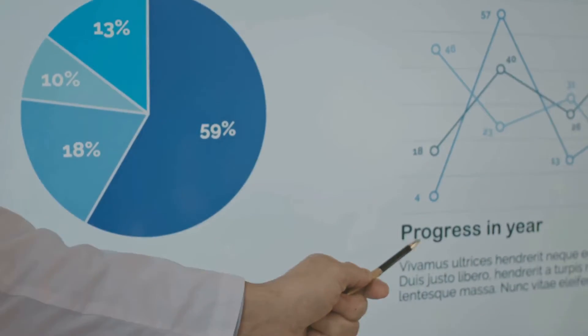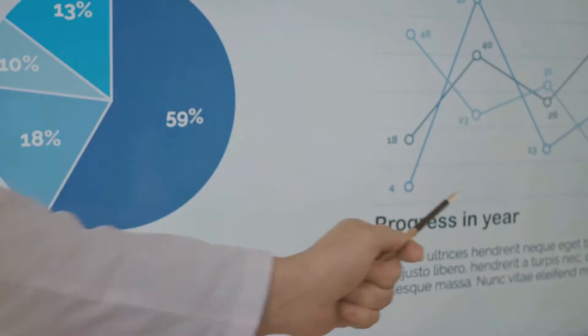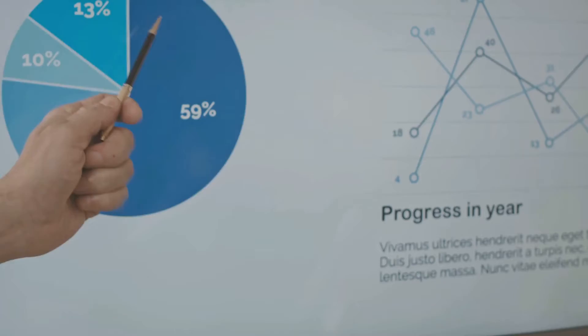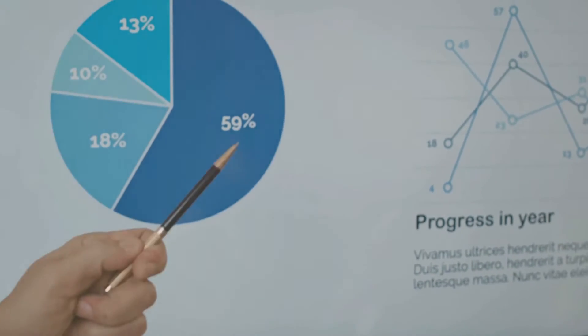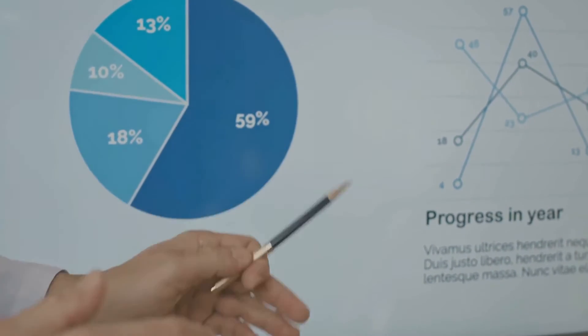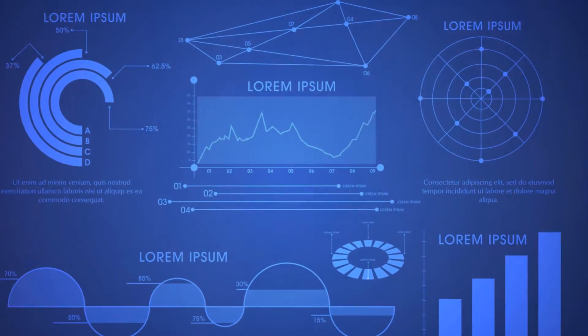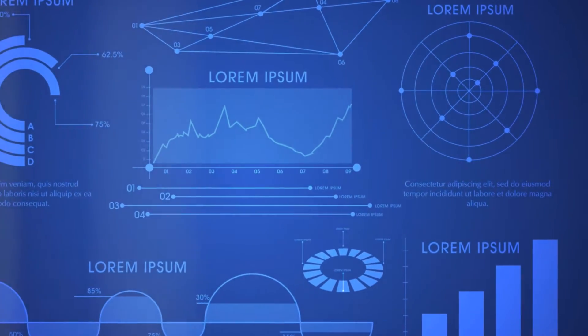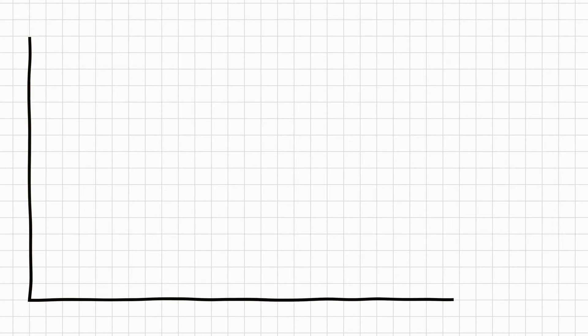Its value ranges from negative 1 to 1, where 1 indicates a perfect test, 0 a worthless test, and negative 1 a test performing opposite to its intention. Youden's Index is the sum of sensitivity and specificity, minus 1.